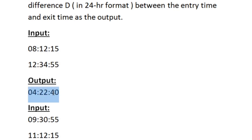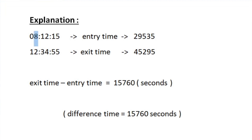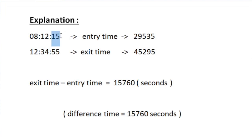There are 4 hours, 22 minutes, and 40 seconds between the two times. To calculate this, we first convert the entry time to seconds. In 8 hours, 12 minutes, and 15 seconds, there are 29535 seconds total. To get this, we multiply 8 by 3600 — since every hour has 3600 seconds — then add 12 into 60, because every minute has 60 seconds, and finally add 15 because it is already in seconds.